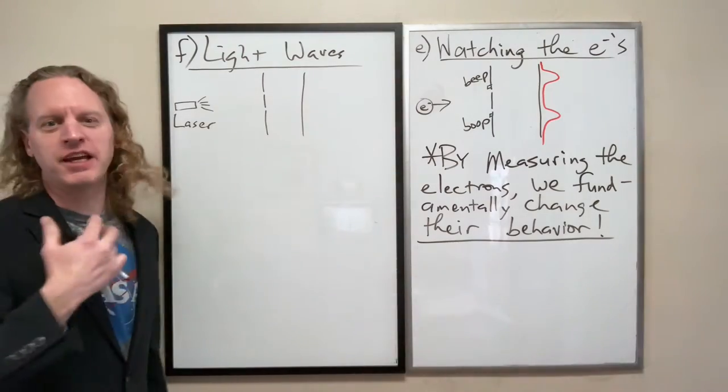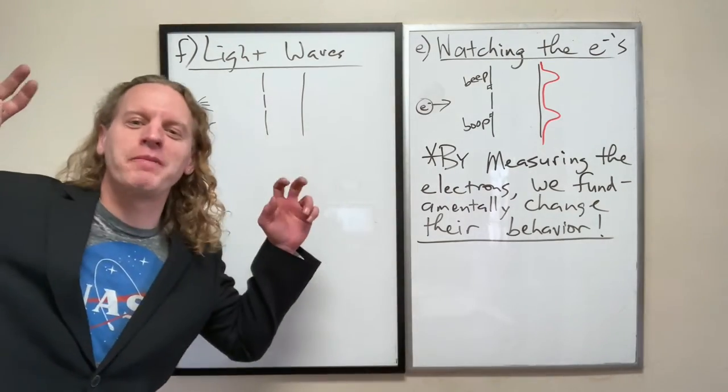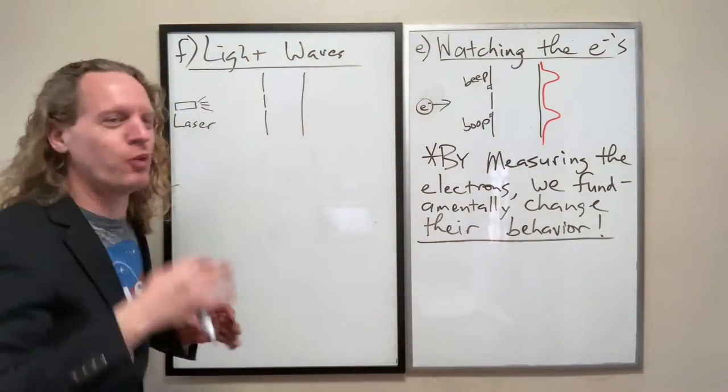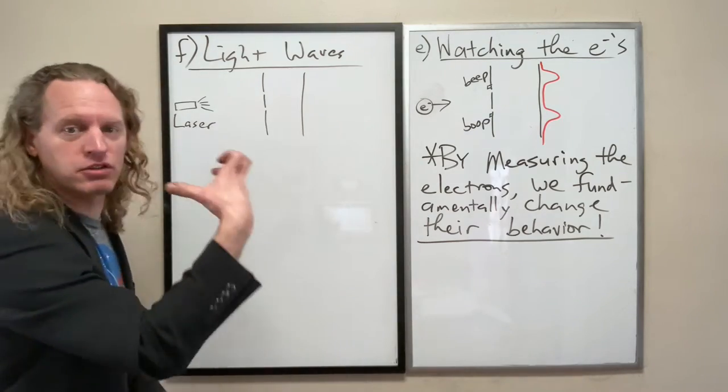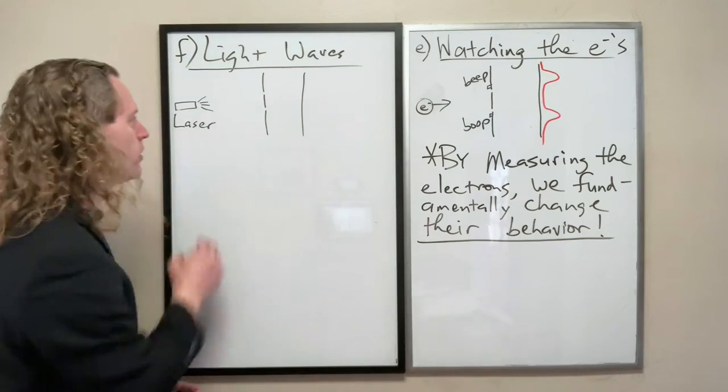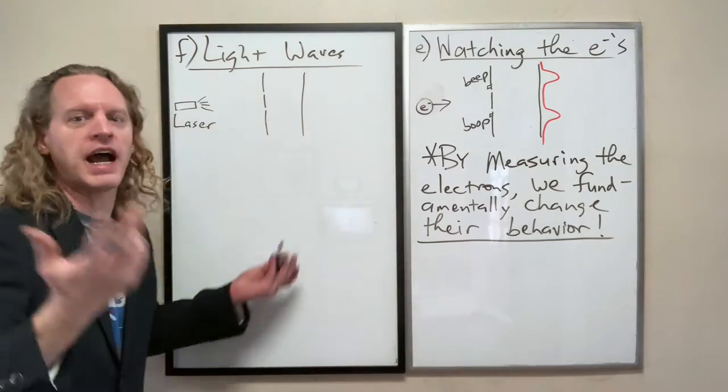By the way, if you want to sound smart, instead of saying a laser, we're going to say a monochromatic light source. And that's what a laser is. By monochromatic, we mean one chrome. Chroma means color. So single colored light source is exactly what a laser is.